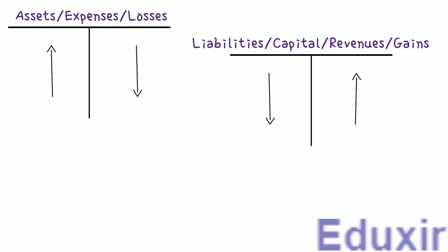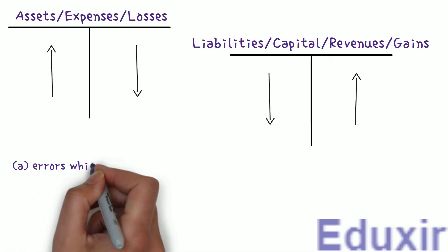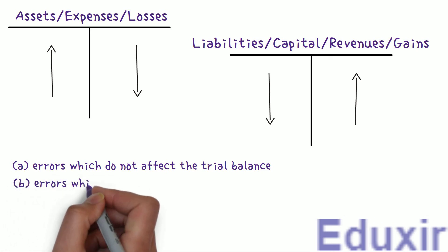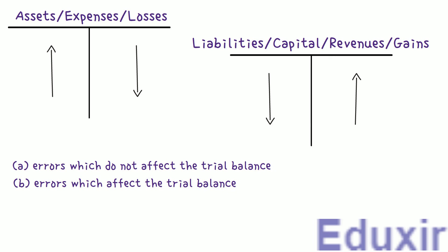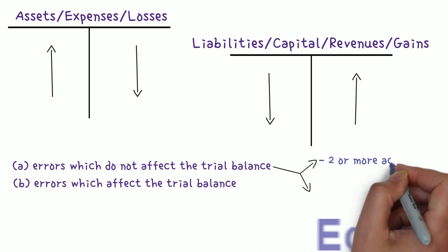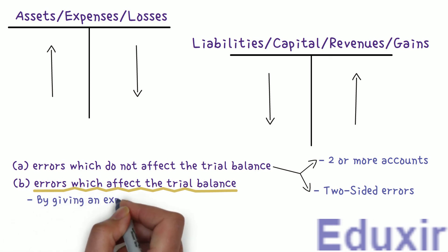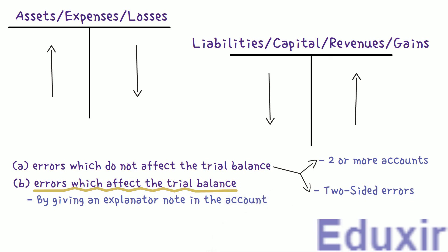From the point of view of rectification, the errors may be classified into the following categories: errors which do not affect the trial balance, and errors which affect the trial balance. Errors which do not affect the trial balance are usually committed in two or more accounts and are also known as two-sided errors. They can be rectified by recording a journal entry, giving the correct debit and credit to the concerned accounts. However, in this problem we are going to deal with the errors which affect the trial balance. These errors affect only one account and can be rectified by giving an explanatory note in the affected account, or by recording a journal entry with the help of the suspense account.